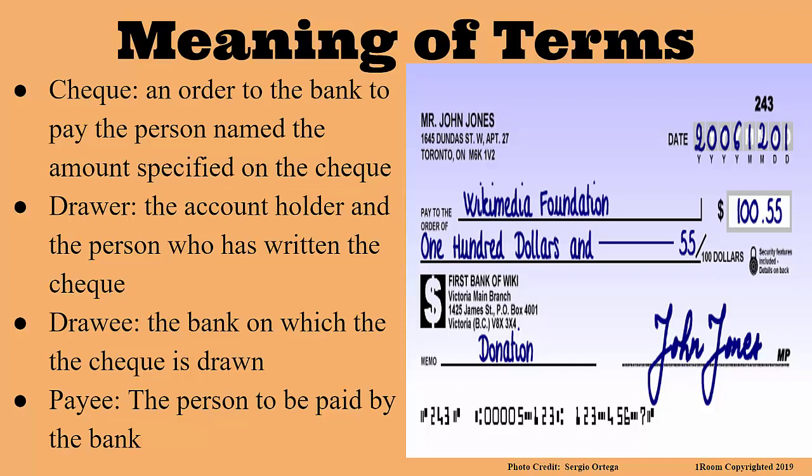I was beginning to wonder how those wooden materials are related to a cheque. You are welcome. The drawer is also the one who writes the cheque. The second term is the drawee. This refers to the bank on which the cheque is drawn. So, it is the bank that pays the money. Correct.